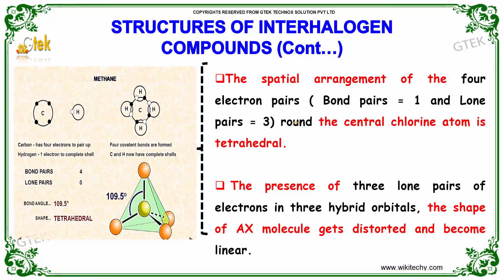The arrangement around the central chlorine atom — with 1, 2, 3, 4 electron pairs — is called tetrahedral.